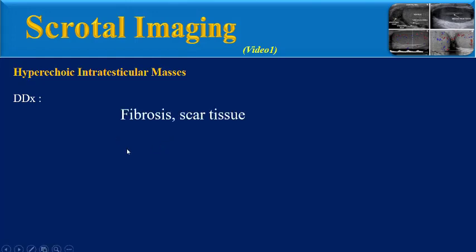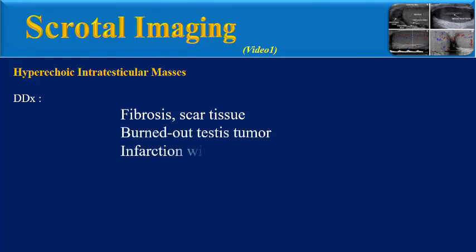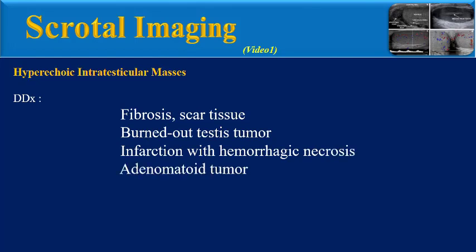The first differential is fibrosis or scar tissue. Another very important entity is burned-out testis tumor in association with hemorrhagic necrosis, adenomatoid tumor, and intra-testicular lipoma.